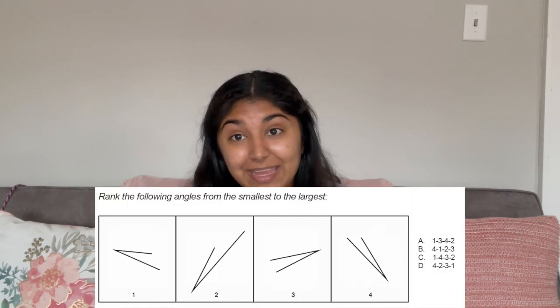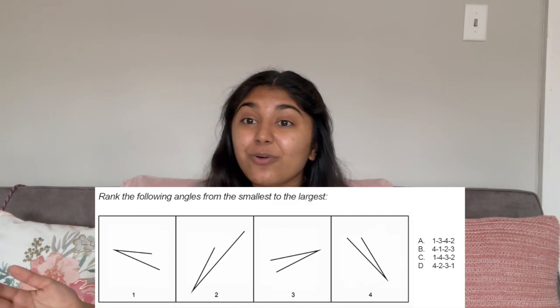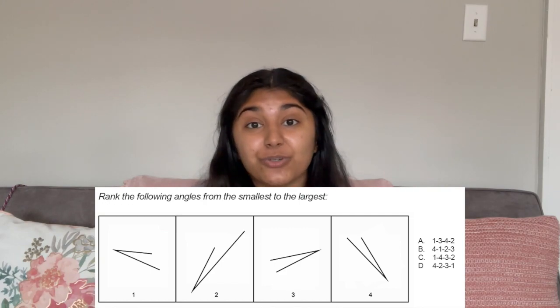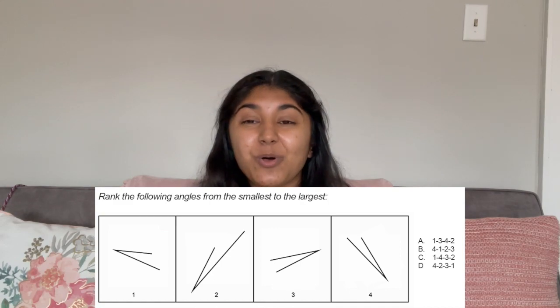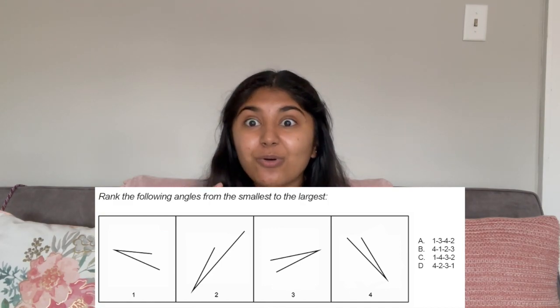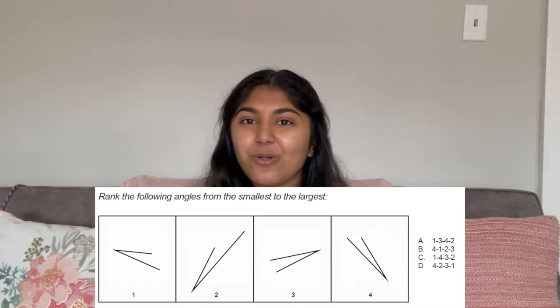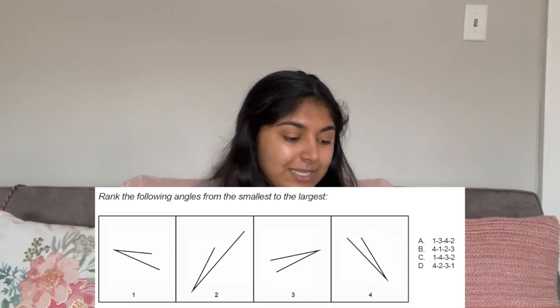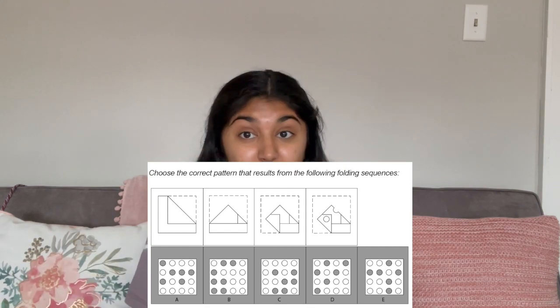The next thing is angle ranking. They're going to give you four different angles, all within three to six degrees of each other, and you have to rank them from smallest to largest. This is actually the part I struggled with the most because they are so close — within three to six degrees of each other — so it's really difficult to know which one's the biggest and which one's the smallest. Next is hole punching: they fold a piece of paper on the screen, punch a few holes in it, and you have to say where the holes will be when they unfold it.